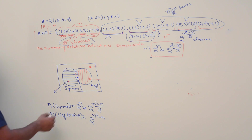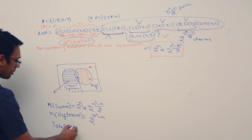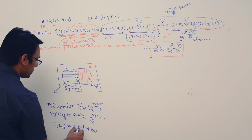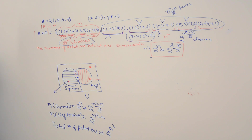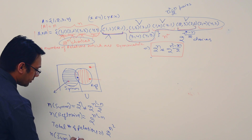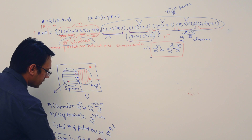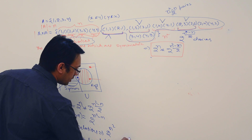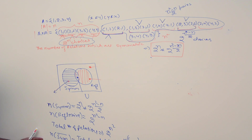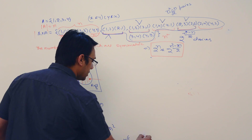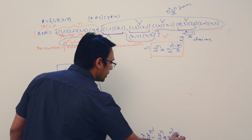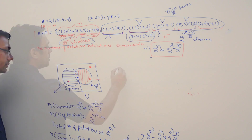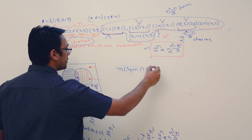The total number of relations possible is 2 raised to the power n squared. Now, the number of relations which are not symmetric is total number of relations minus the number of symmetric relations, which equals 2^(n²) minus 2^n × 2^((n²−n)/2).